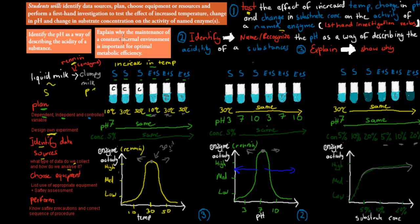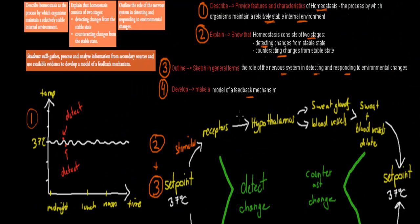The last one uses the verb 'explain' — explain why the maintenance of a constant internal environment is important for metabolic efficiency. Metabolic efficiency is how well your enzymes work. If you have a temperature that's not ideal — say, not kept at 37 or 38 degrees — your enzymes become denatured, their metabolic activity will go down, and efficiency goes down too. That means we have problems with chemical reactions in our body.